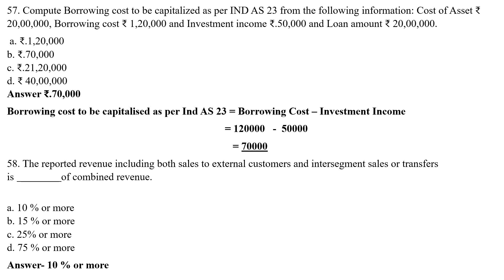Question 57: Compute borrowing cost to be capitalized as per Indian Accounting Standard 23. Cost of asset: Rs. 20 lakh, Borrowing cost: Rs. 1,20,000, Investment income: Rs. 50,000, Loan amount: Rs. 20 lakhs. The formula is: Borrowing cost to be capitalized = Borrowing cost − Investment income = Rs. 1,20,000 − Rs. 50,000 = Rs. 70,000. The answer is Rs. 70,000.